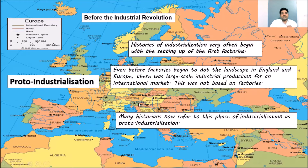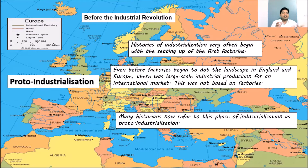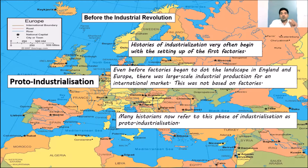Many historians now refer to this phase as proto-industrialization — meaning before industrialization actually happened, before factories were set up, there was already a process of production taking place. That process of production is known as proto-industrialization.